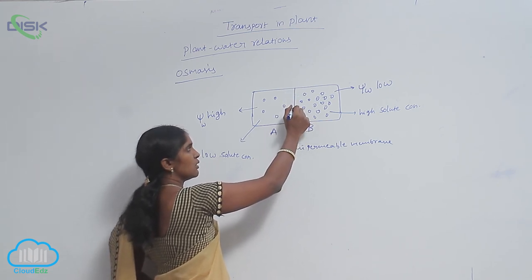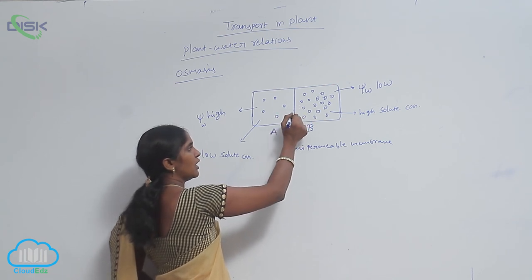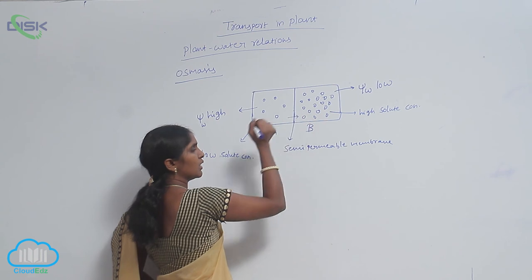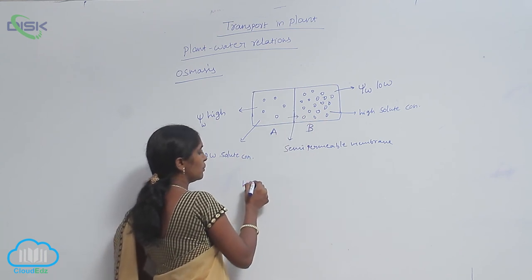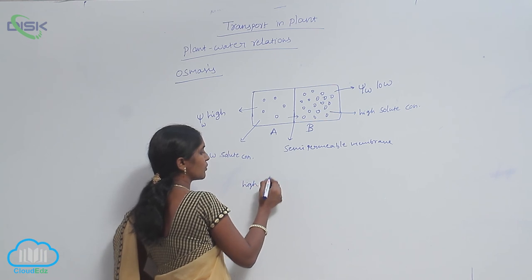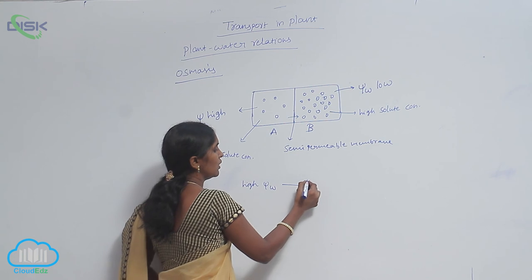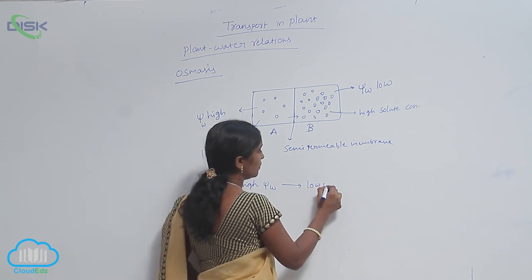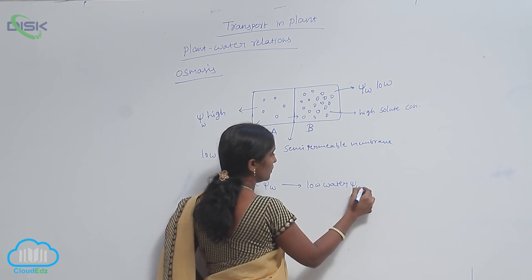To reduce the solute concentration, the water is migrated from A to B. It indicates what? High water potential to low water potential. The water can move.